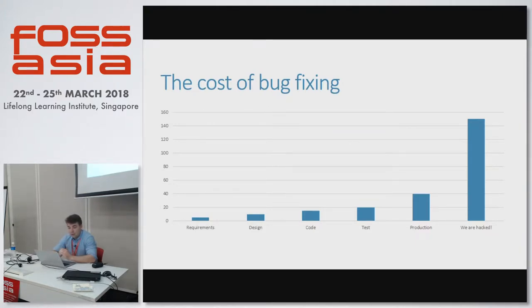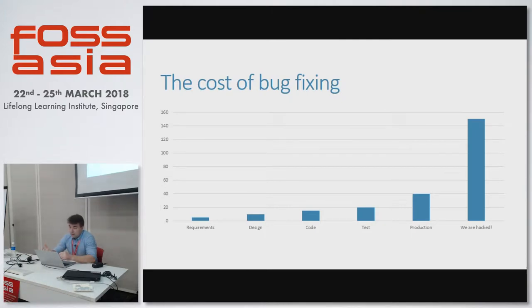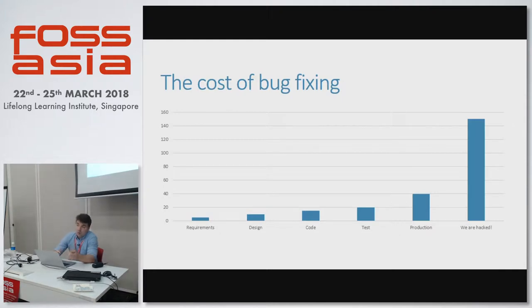Before we go deep into technical questions, I want to show you this slide about the estimated cost of bug fixing. Imagine you're starting a new project: if you have a bug during requirements gathering, design, or architecture, the fix is cheap — you just pay a developer to spend another hour on it. Once in the QA stage and testing, it gets more complicated because you run integration tests and might pay for four more hours to fix it.